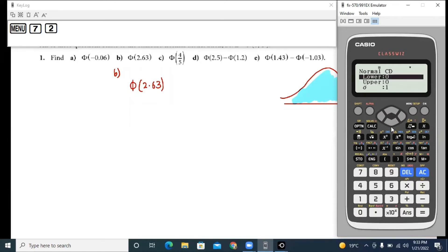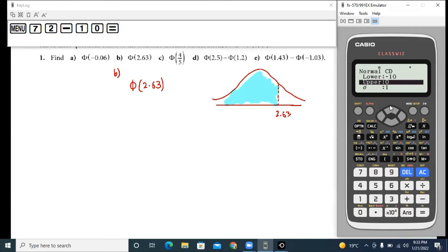Since you're always reading the area below the normal distribution curve, you need to enter into lower is always minus 10. Honestly, any number below minus 4 would work, but just as a rule of thumb I'm keeping minus 10.